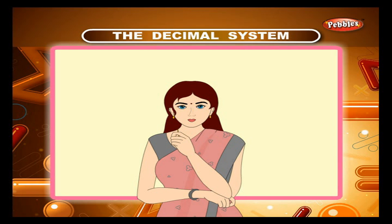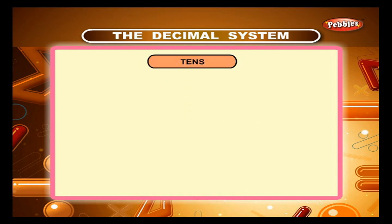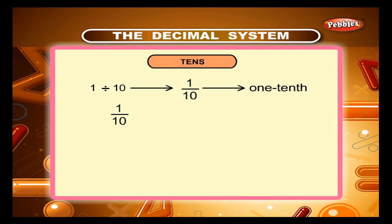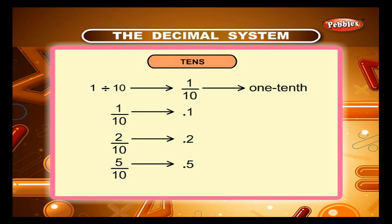What is the place value of the digit 1 when it moves from left to right by one place? It has to be 1 divided by 10. 1 divided by 10 is written as 1/10 and read as 1 tenth. We also write 1 tenth as 0.1. 2 tenths is written as 0.2 and read as 0.2. 5 tenths is written as 0.5. We always write 0.1 and 0.2 with a 0 before the decimal point to show that the number in the ones place is 0.